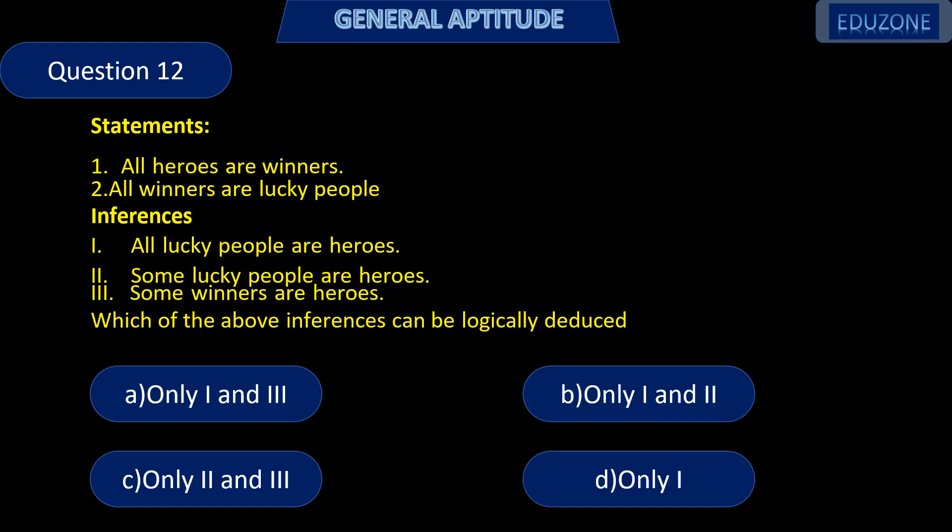Next question. All heroes are winners. All winners are lucky people. Inferences: (1) All lucky people are heroes. (2) Some lucky people are heroes. (3) Some winners are heroes. Which of the above inferences can be logically deduced?